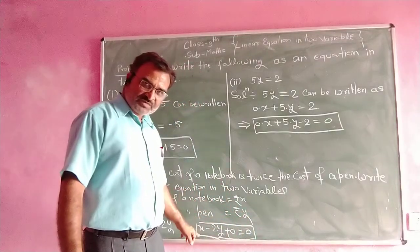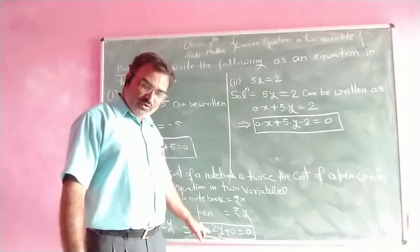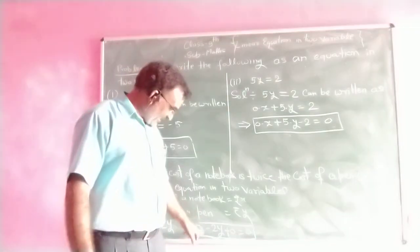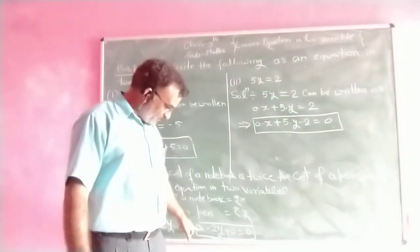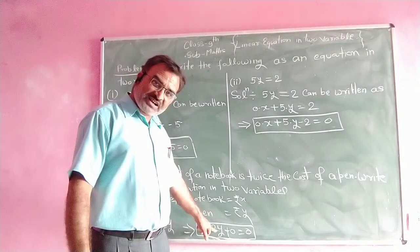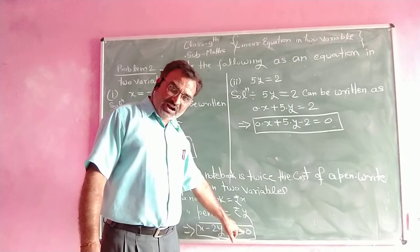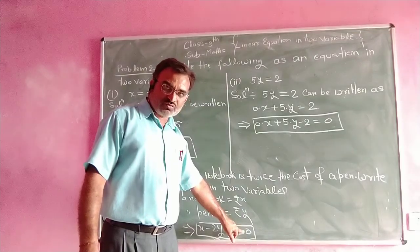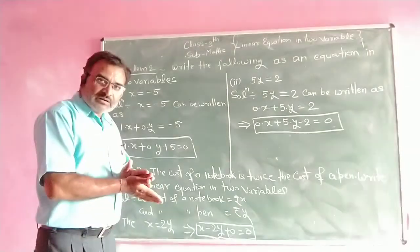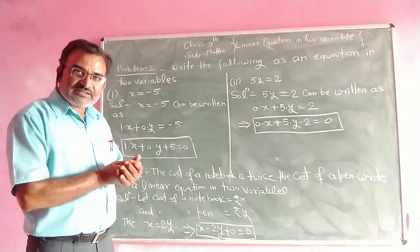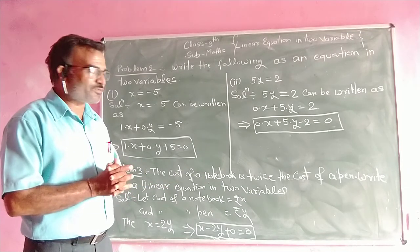Comparing with the standard form of the linear equation, we find: a is equal to the coefficient of x, which is 1; b is equal to the coefficient of y, which is minus 2; and c is equal to the constant term, that is 0. So this is the linear equation of the given word problem. In this way, you can solve problems related to linear equations in two variables.